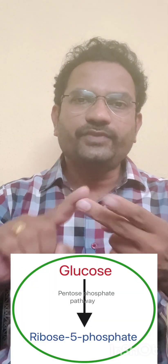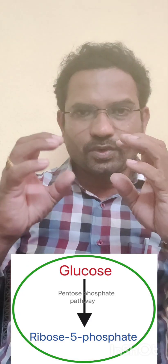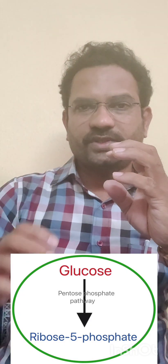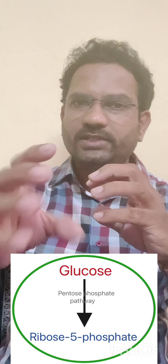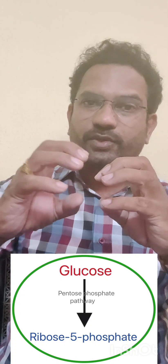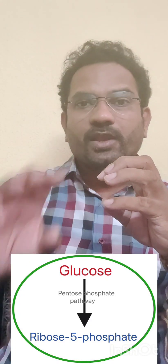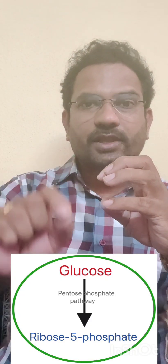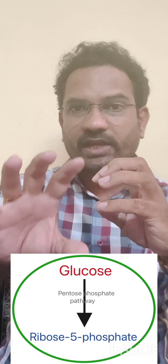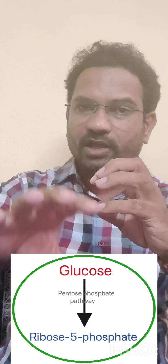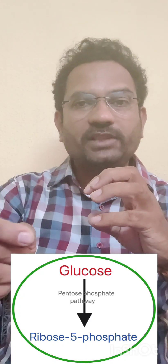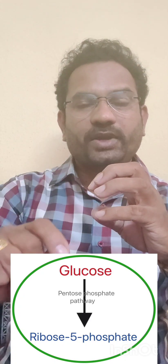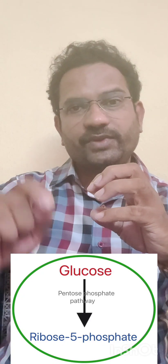There are certain pathways to understand. The pentose phosphate pathway is one of them. Glucose has multiple pathways — one pathway breaks glucose down into pyruvate, which is glycolysis. Glucose can also be oxidized to form five-carbon containing rings called pentose phosphates, specifically ribose phosphate. This pathway is called the pentose phosphate pathway.